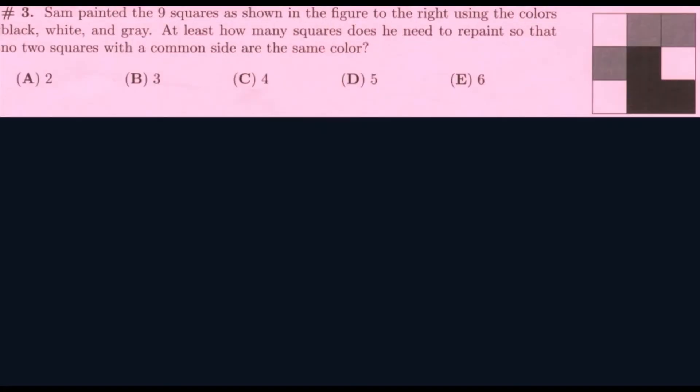The next question is: Sam painted the nine squares as shown in the figure to the right using the colors black, white, and gray. At least, how many squares does he need to repaint so that no two squares with a common side are the same color? So, these two pieces are the same. If I change this piece right here to black, now all of these first six are all fixed. And I can change one of these two black pieces right here to gray, and that would make the last three fix. So, it would be two changes. Our answer is A.